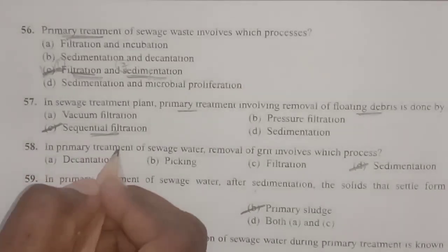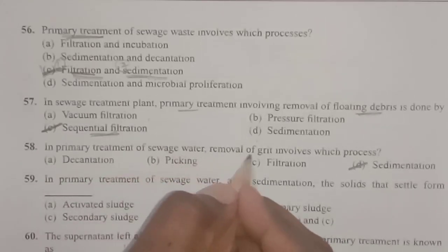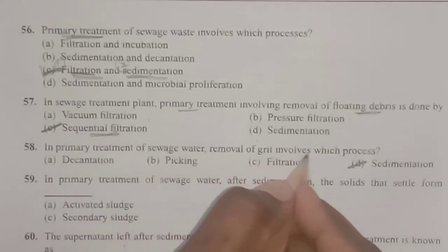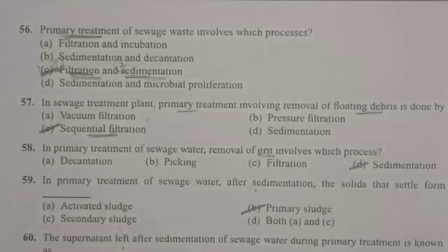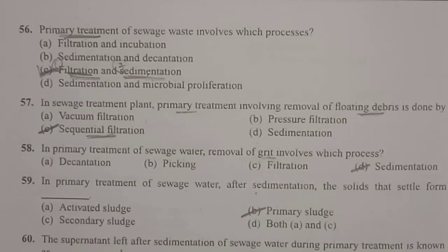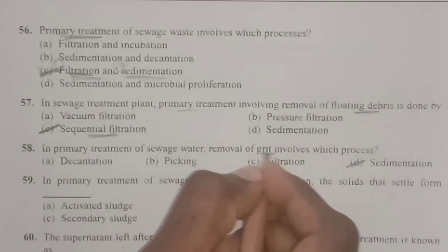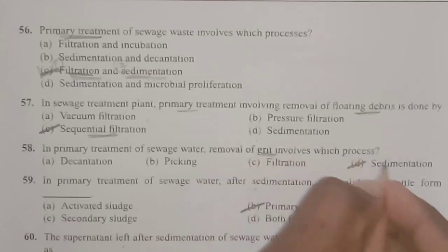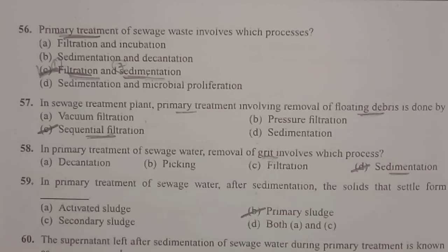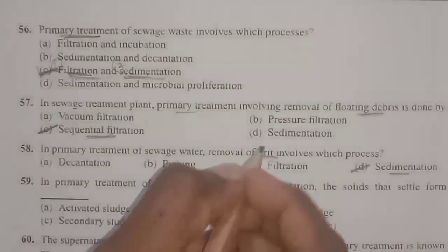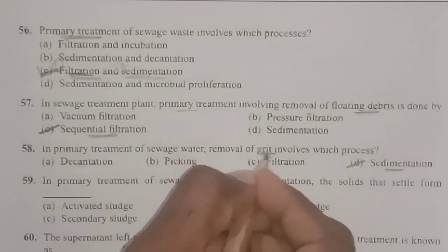Next: in primary treatment of sewage water, removal of grit involves which process? Grit — small pebbles and soil particles — settles at the bottom of the tank through sedimentation. Sedimentation is the second step in primary treatment, where grit particles settle and form grit.